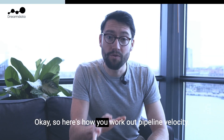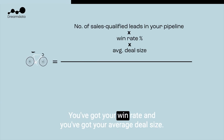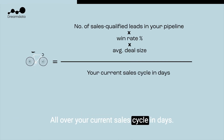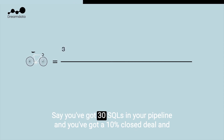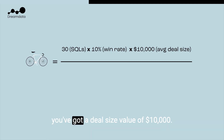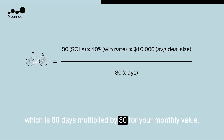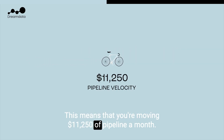Here's how you work out pipeline velocity. You've got number of sales qualified leads in your pipeline, your win rate, and your average deal size — all over your current sales cycle in days. For example: 30 SQLs, a 10% win rate, and a deal size of $10,000. Multiply these together and divide by your current sales cycle of 80 days, then multiply by 30 for your monthly value. This means you're moving $11,250 of pipeline a month.